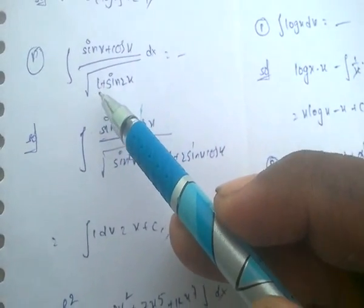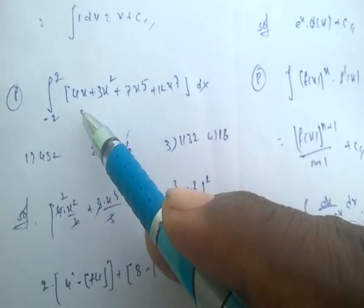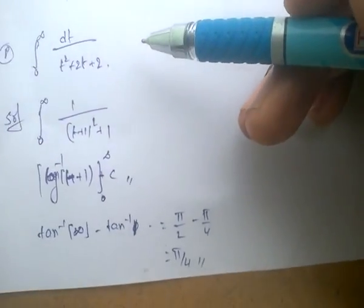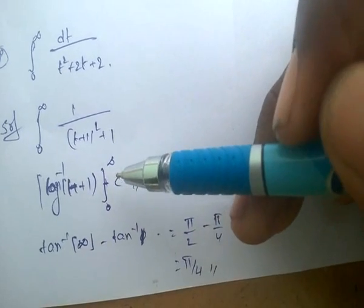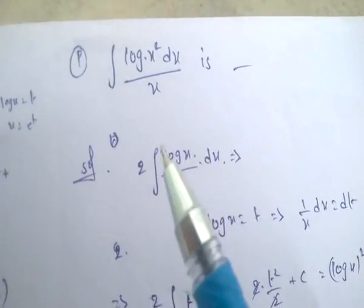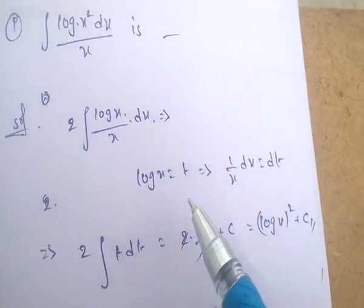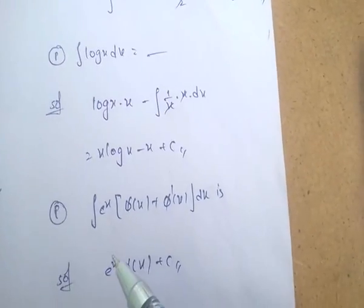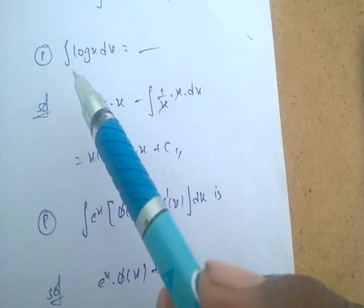For problems involving 1/(sin²x · cos²x), replace 1 with sin²x + cos²x and simplify to get the answer. For definite integrals, integrate and apply the limits, for example minus 2 to 2. Some problems use substitution — set t equal to a suitable expression, simplify, apply limits, and get the answer. Also, integral of log x dx equals x·log x minus x plus c, from the by-parts rule.